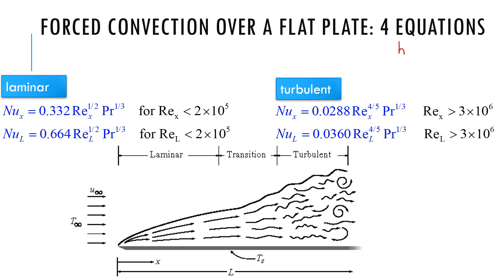H is a function of X, Reynolds number at distance X along the flow, and Prandtl number. And sure enough, the equation that we see, like this one or this one, that is indeed the case. It has Reynolds number and Prandtl number in them.